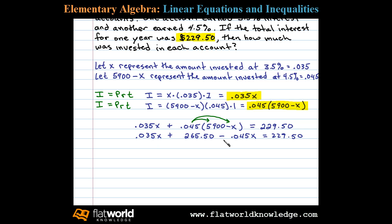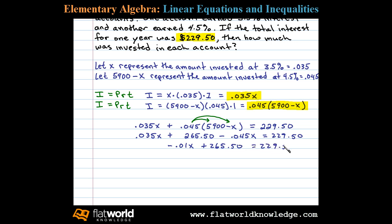Here we have same-side like terms. Combining 0.035X and minus 0.045X gives negative 0.01X, plus 265.50, equals 229.50.